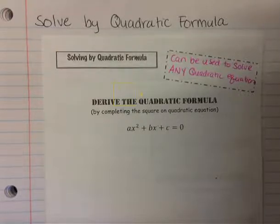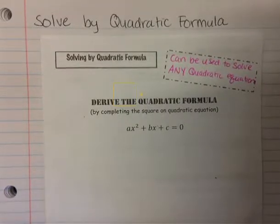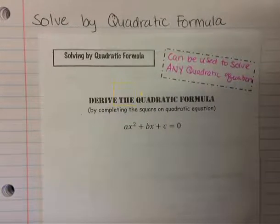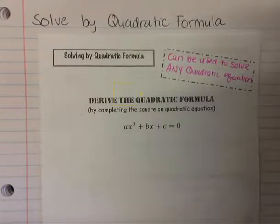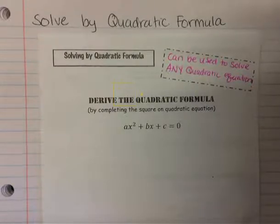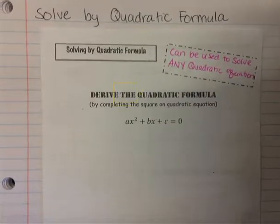It's basically the golden rule of quadratics. You still need to make sure you understand what the directions say so you use the correct method, but you can always check your answers using the quadratic formula because it can be used for any type of quadratic.